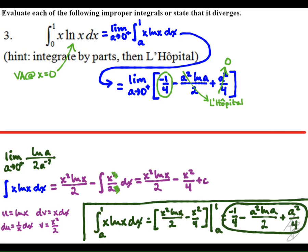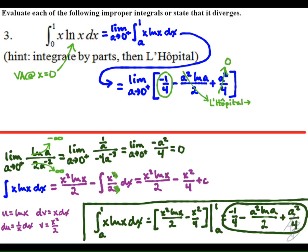We rewrite the limit of that expression. One term goes to 0, while another term is an indeterminate form requiring L'Hôpital's rule. Applying L'Hôpital's rule gives 0 for that second term as well. So we get negative one-fourth minus 0 plus 0, giving a final answer of negative one-fourth. Points were given for this answer, for rewriting as a limit with a variable lower limit approaching 0 from the right, and for evaluating the definite integral from a to 1.